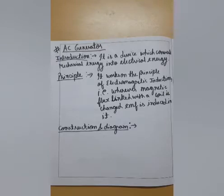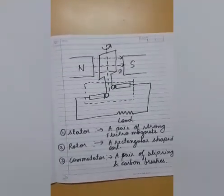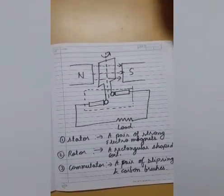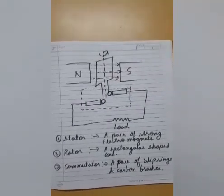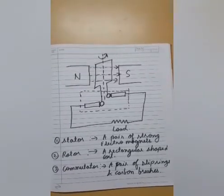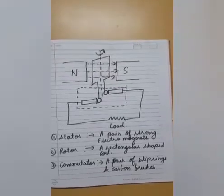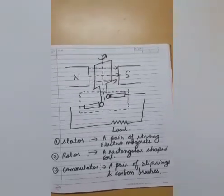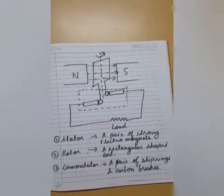Now let us discuss about the construction and diagram of AC Generator. So you can clearly see that this is the diagram of AC Generator. In this diagram it is very clear that we have three major parts of AC Generator.